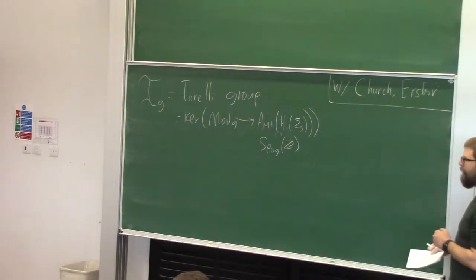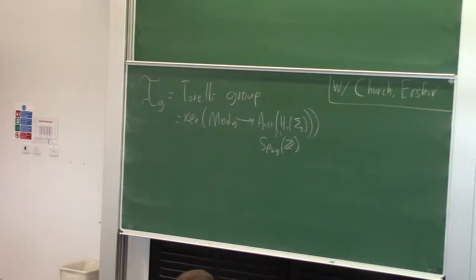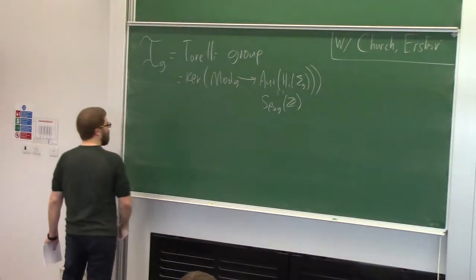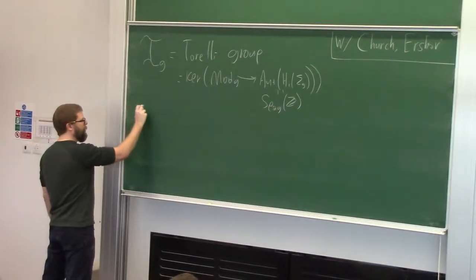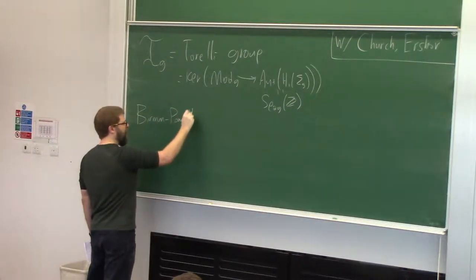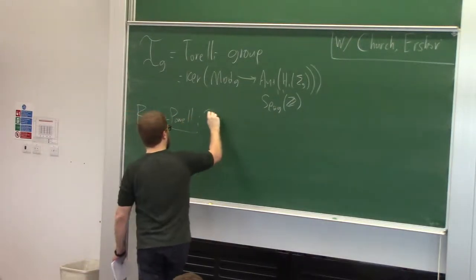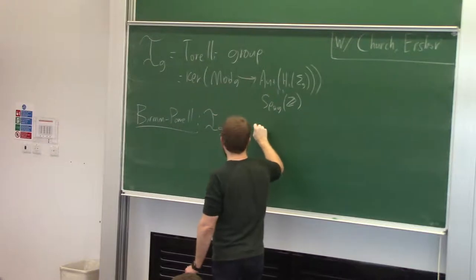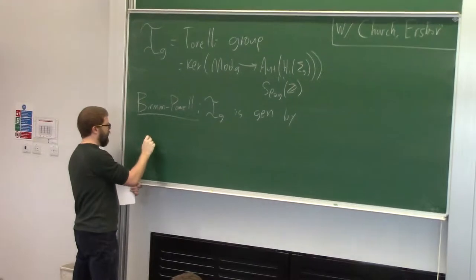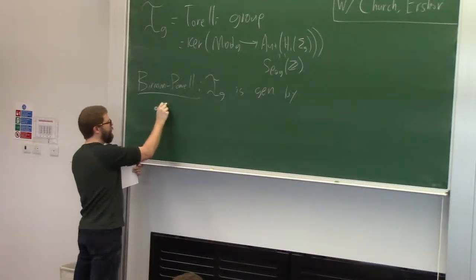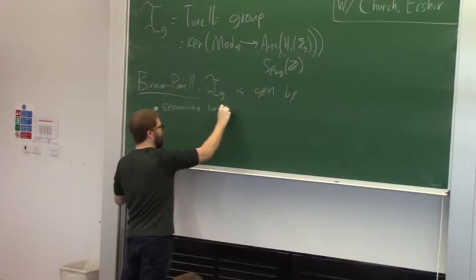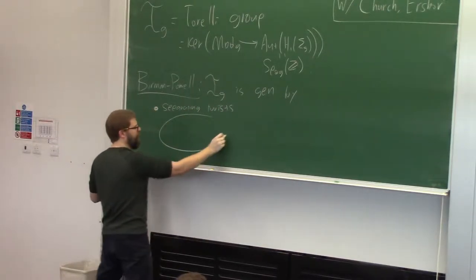I want to tell you some things about finiteness properties of this group and its subgroups. We should first get acquainted with it a bit. Maybe I should tell you some elements of it. There's a theorem of Birman and Powell. What does it say? It says that the Torelli group is generated by two kinds of things. The first are separating twists — these are Dehn twists about curves that separate the surface. So you have your surface and there is a separating curve x, and there is T_x.